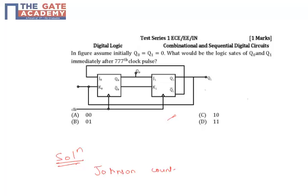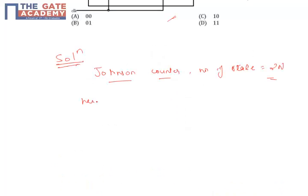For a Johnson counter, the number of states is equal to 2n. This is a Johnson counter where number of states is equal to 2n. Here n equals 2.